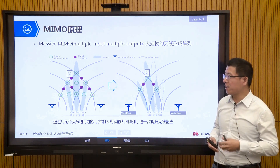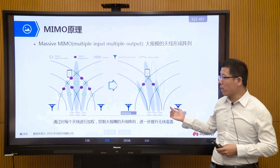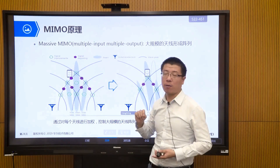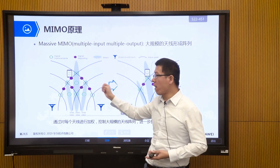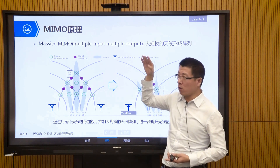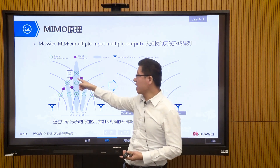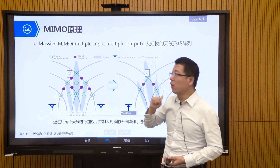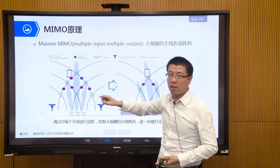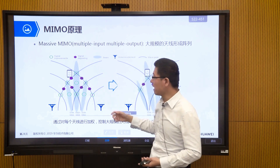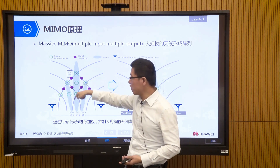The principle is actually similar to wave interference. For example, we have two antennas here, and the electromagnetic waves we emit are all vector signals — they have both magnitude and direction. We emit electromagnetic waves that have wave peaks and wave troughs. When superimposing in space, if it is the superposition of wave peak and wave peak, it forms a strong point of the signal. If it is the superposition of wave peak and wave trough, it forms a weak point. Through such superposition of vector signals, we can form directional beams.